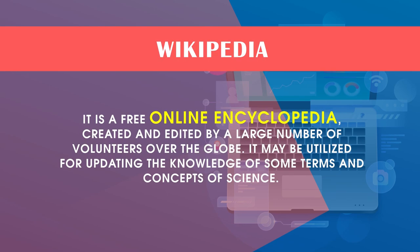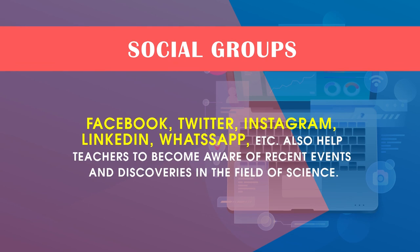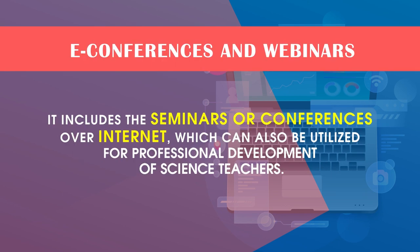Wikipedia is a free online encyclopedia created and edited by volunteers across the globe, and may be utilized for updating knowledge of terms and concepts in science. Social groups like Facebook, Twitter, Instagram, LinkedIn and WhatsApp are also great platforms for professional development. These help teachers become aware of recent events and discoveries in science, and classroom management and teaching methods can be shared with other professionals. E-conferences and webinars — seminars or conferences over the internet — can also be utilized for professional development of science teachers.